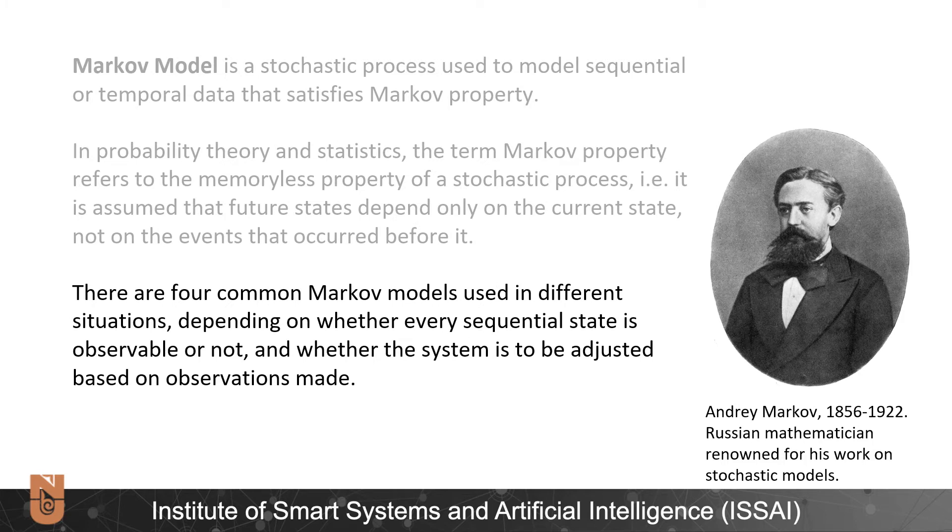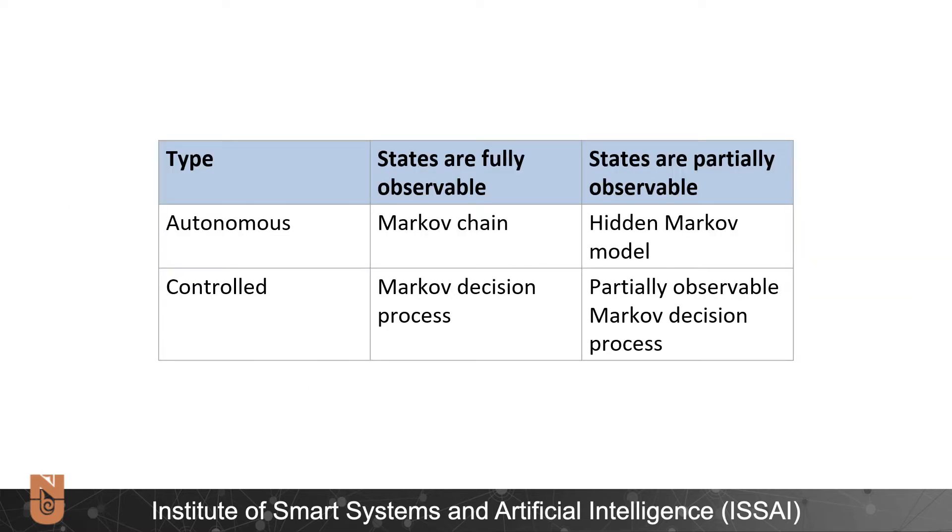There are four common Markov models used in different situations, depending on whether every sequential state is observable or not, and whether the system is to be adjusted based on observations made. States are observable in Markov chain and Markov decision process, which are autonomous and controlled respectively, and for the cases where states are partially observable we have HMM and partially observable Markov decision process.